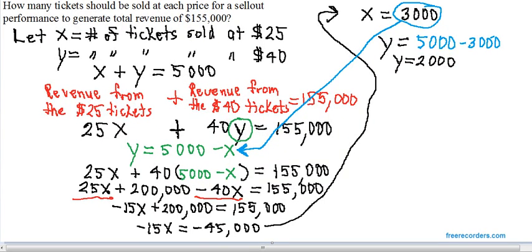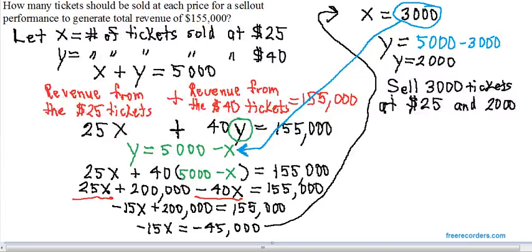Remember, you always answer a word problem in words. So let's now answer the question we were asked. It asked us how many tickets should be sold at each price. So sell 3,000 tickets at which price? Remember, X is 3,000 and if you go back to the let statement, X was the ticket sold at $25, and sell 2,000 tickets at the $40 price.